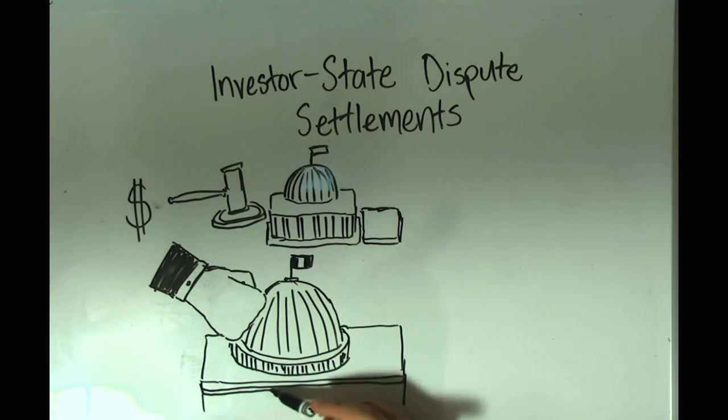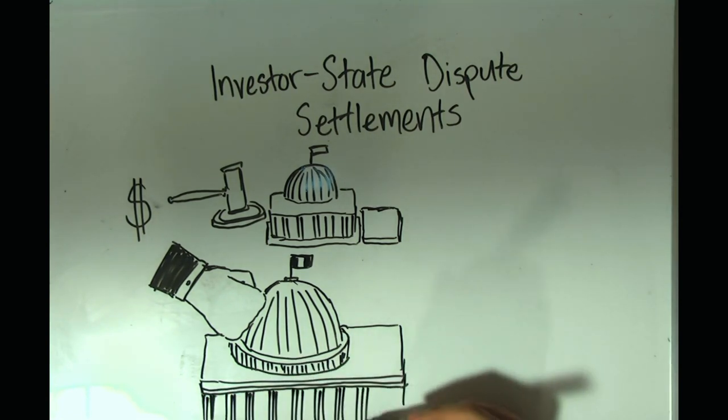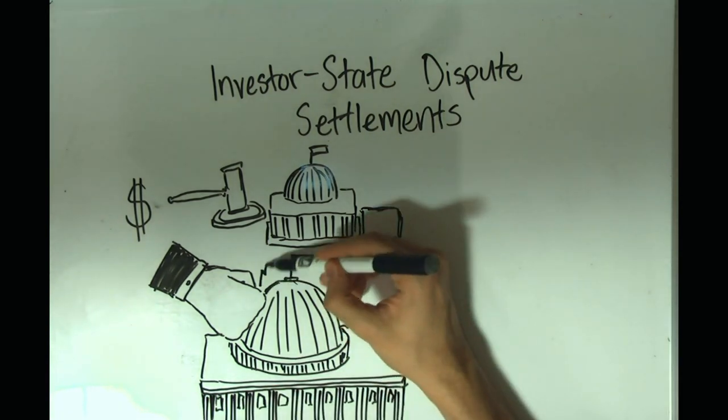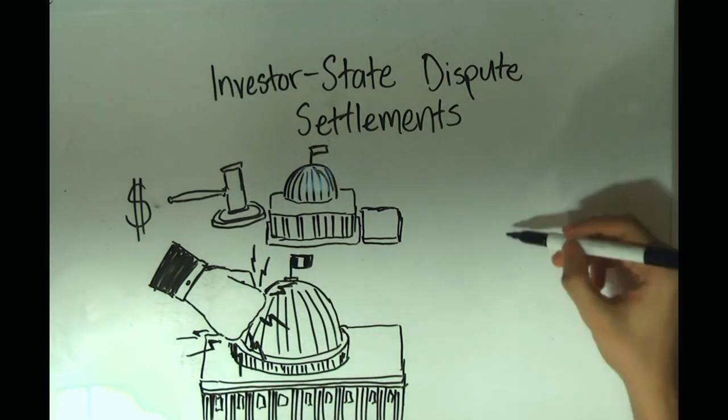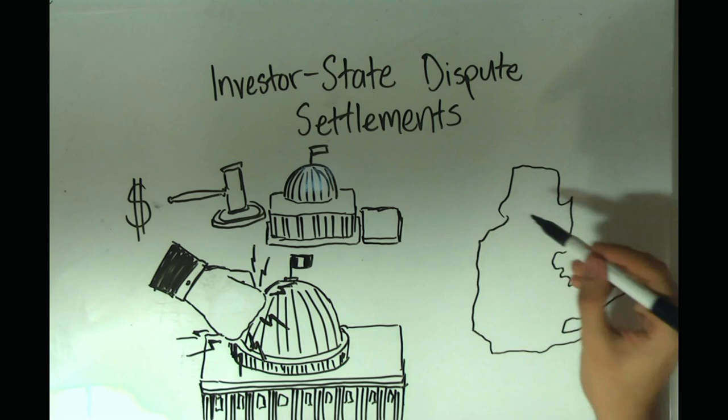When Quebec tried to pause fracking for natural gas on its territory, Lone Pine, a Canadian energy company, sued the government and won millions of dollars. Canada has lost millions of dollars in this process to American companies.